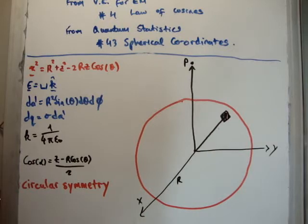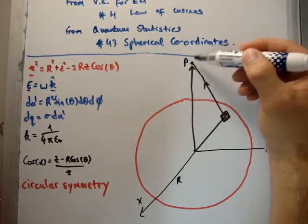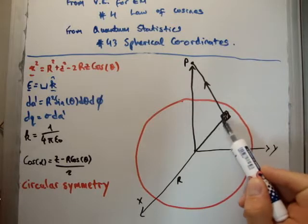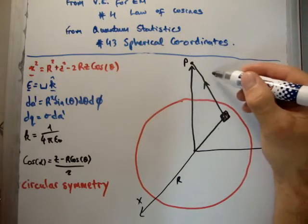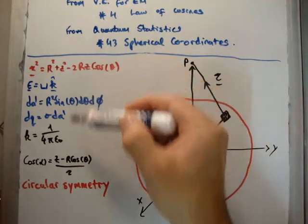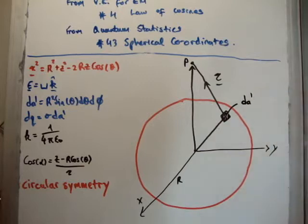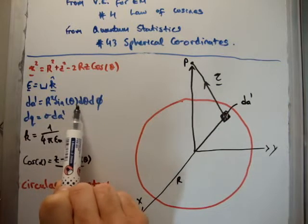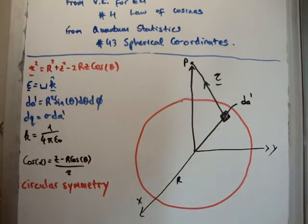As normal, we need to come up with our separation vector — the vector which goes from your source charges to your test point. In this case, the test point is at P, and the surface area element is our source charge, so the vector points up in that direction. In spherical coordinates, dA prime is R squared sin theta d phi d theta, and the infinitesimal charge is sigma dA prime.